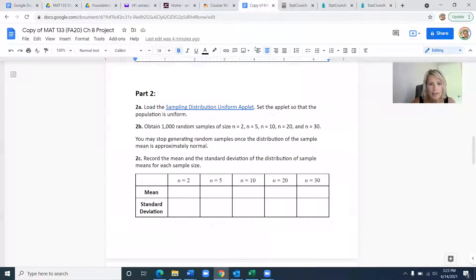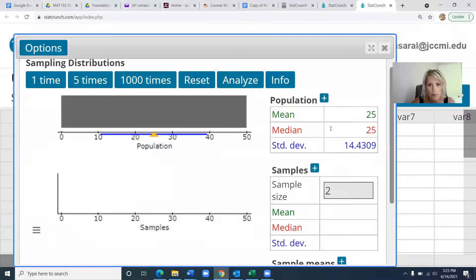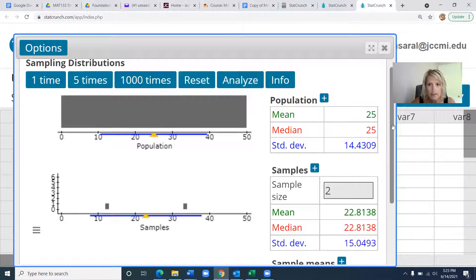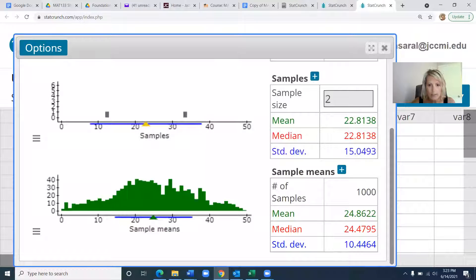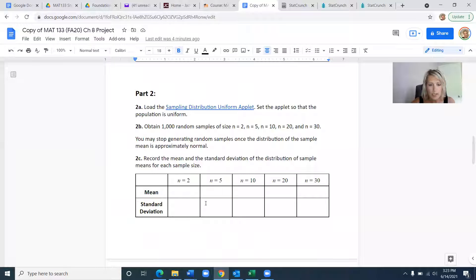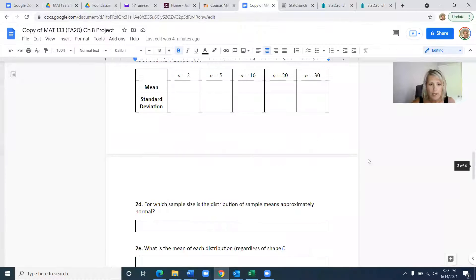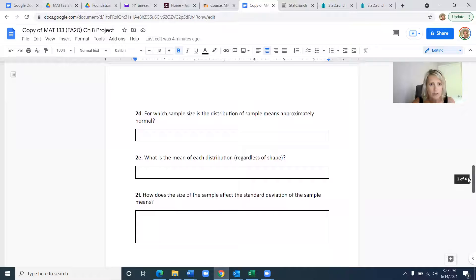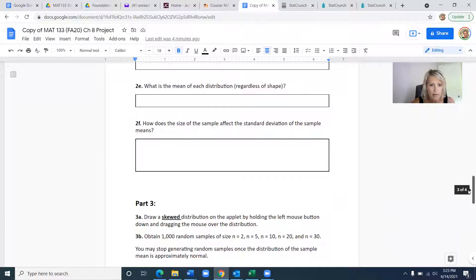It's asking you to obtain a thousand samples of size 2, 5, 10, 20, and 30. Similar to what we did before, you've got the sample size of 2, and you're going to hit that a thousand times. Again, you're going to jot down what's in the very bottom box here in your table each time: 2, 5, 10, 20, 30. Then it's asking you to make some observations on parts 2d, 2e, and 2f.